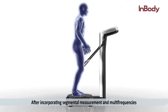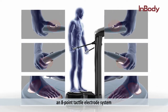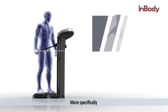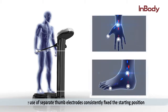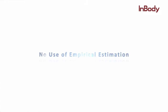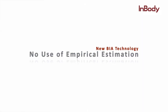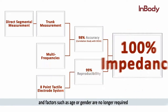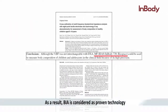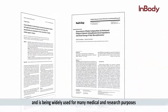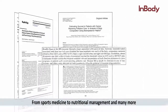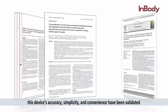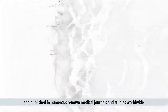After incorporating segmental measurement and multi-frequencies, an eight-point tactile electrode system was also adapted to enhance and maintain the reproducibility of results. More specifically, the use of separate thumb electrodes consistently fixed the starting position regardless of the way the electrodes were held. Today, with these technologies, high accuracy is achieved and factors such as age or gender are no longer required. As a result, BIA is considered proven technology and is widely used for many medical and research purposes — from sports medicine to nutritional management and many more. This device's accuracy, simplicity, and convenience have been validated and published in numerous renowned medical journals and studies worldwide.